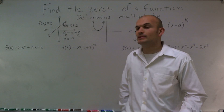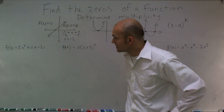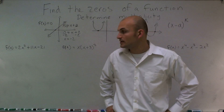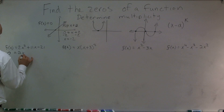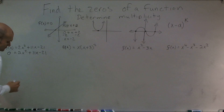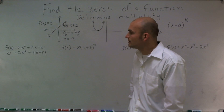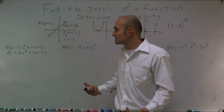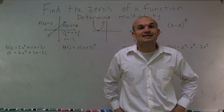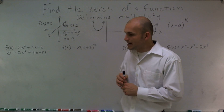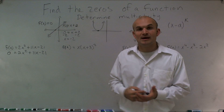Let's take a look at our first example and determine the multiplicity and zeros. I have a quadratic function: f of x equals 2x squared plus 11x minus 21. First, I set 0 equal to f of x. Now the next thing I need to do is find my values of x. This one requires a factoring technique — I'm going to use the diamond method to work on my factoring.